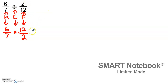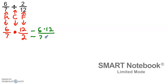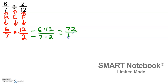Now I go to step three where I multiply straight across — numerator times numerator, so six times 12, over denominator times denominator, so seven times two. Six times 12 gives me 72, and seven times two gives me 14.